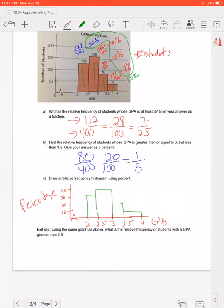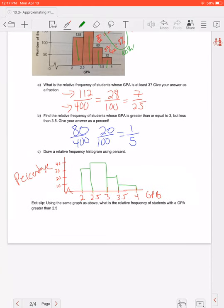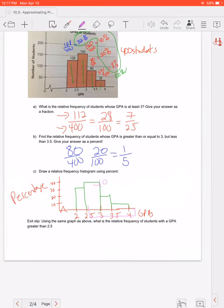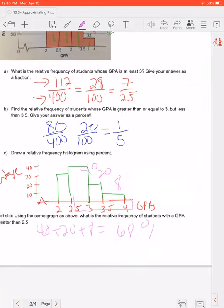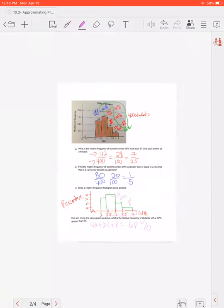All right, hopefully that's helpful. There is an exit slip. So it says, using the same graph as above, what is the relative frequency of students with a GPA greater than 2.5? So go ahead and pause the video and try it and come back and check your answer. So greater than 2.5 would be here. And we know that that is 40, 20, and 8% for each bar. So 40 plus 20 plus 8 would be a 68% chance that a student has above a 2.5 GPA. Have a wonderful day and we'll talk to you later. Bye.